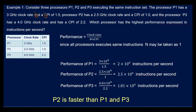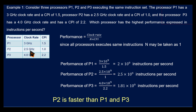Now let us see one example. Consider three processors P1, P2, and P3 executing the same instruction set. Processor P1 has a 3 GHz clock rate and a CPI of 1.5. Processor P2 has a 2.5 GHz clock rate and a CPI of 1. Processor P3 has a 4 GHz clock rate and a CPI of 2.2. Which processor has the highest performance expressed in instructions per second?